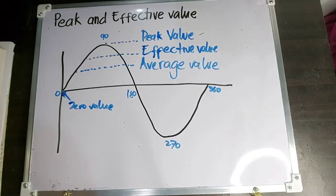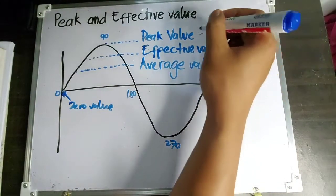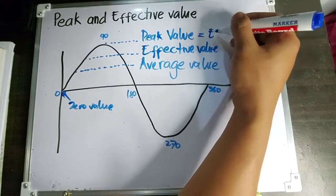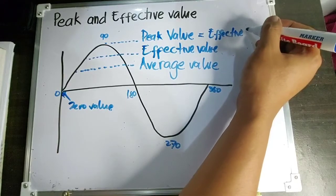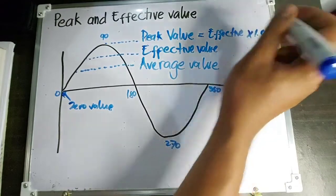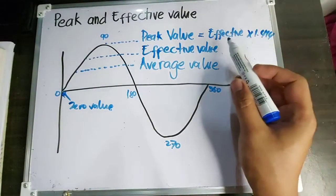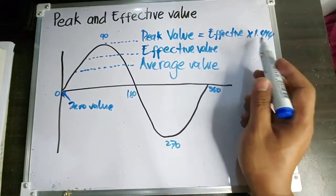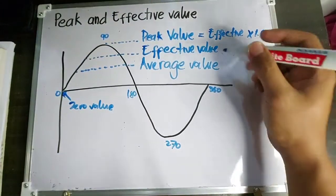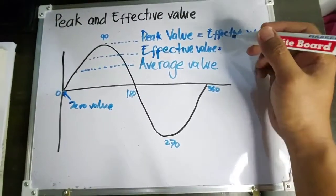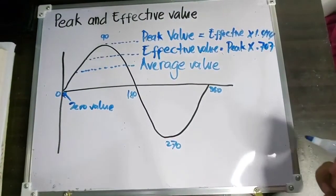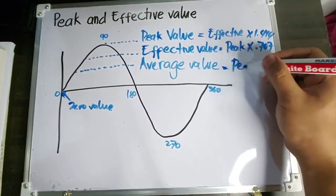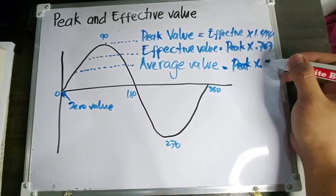Itong effective value at peak value, mayroon silang formula. Pati na rin yung average value, may mga formula sila. Una is yung peak value — ito yung derived formula. Peak value is effective value times 1.414. Effective value para makuha ay peak value times 0.707. Then, the average value is peak times 0.637. Ito yung mga derived formula.